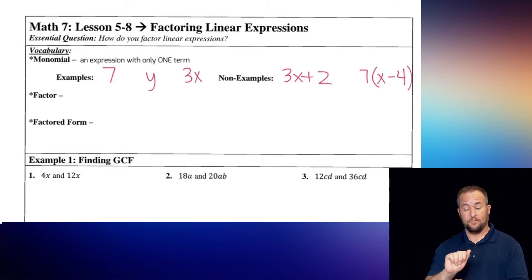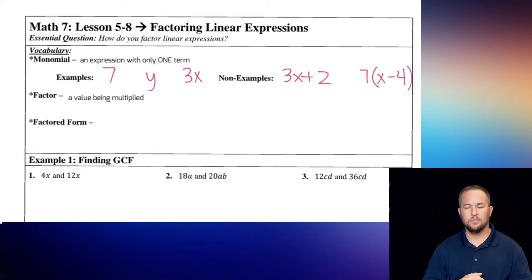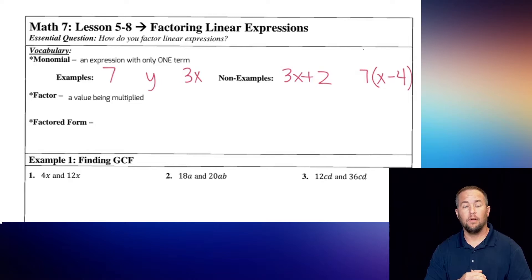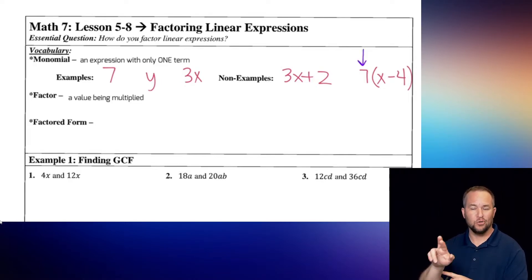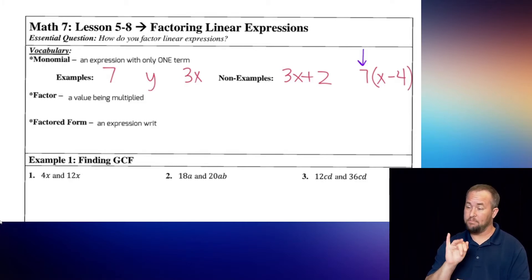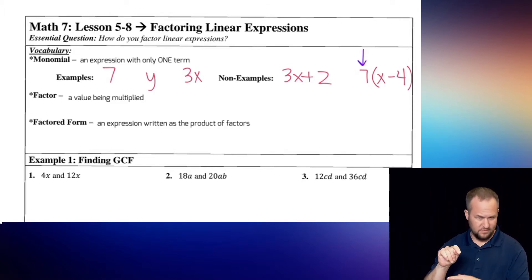For factors, it is a value being multiplied — that's what's being multiplied to the other thing. For instance, this number 7 in that non-example, that's actually a factor. It's what's being multiplied to the rest of the expression. And then factored form is an expression written as the product of factors.